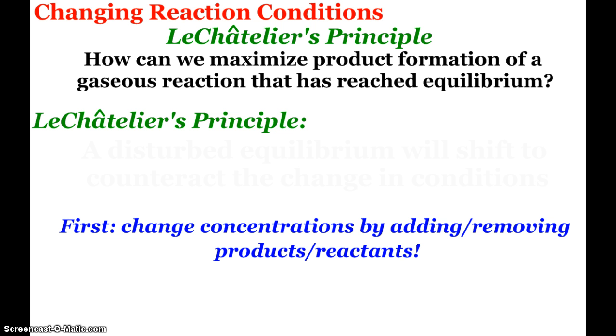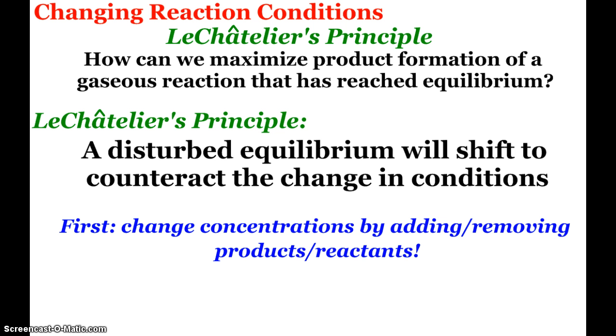Hopefully you remember Le Chatelier's principle. That basically says that if you have an equilibrium and it's disturbed, it's going to shift to counteract the change in conditions. It's going to shift in an effort to fix the disturbance. So the first thing we're going to look at is if we change concentrations of our equilibrium by adding or removing products or reactants, what's going to happen?